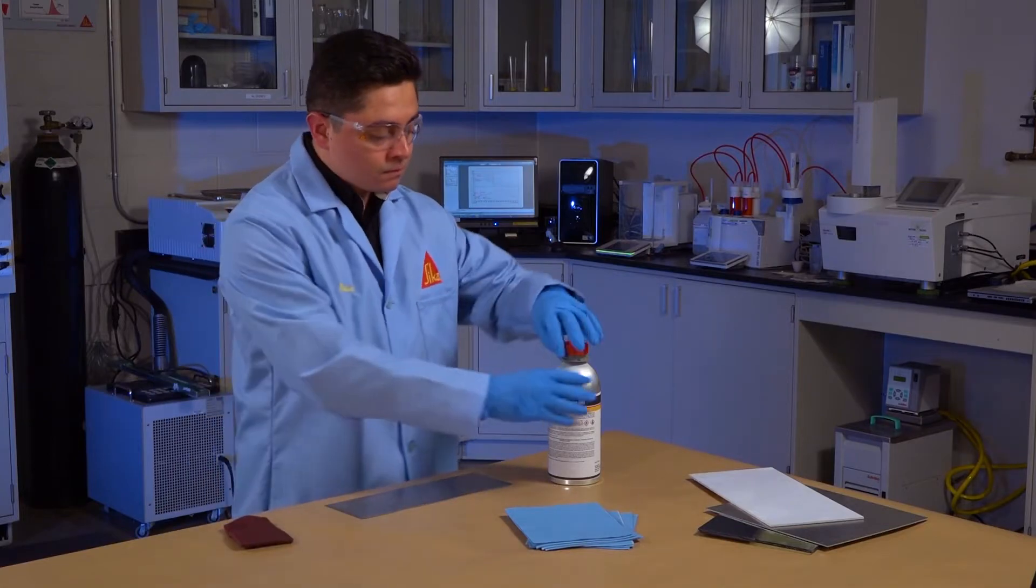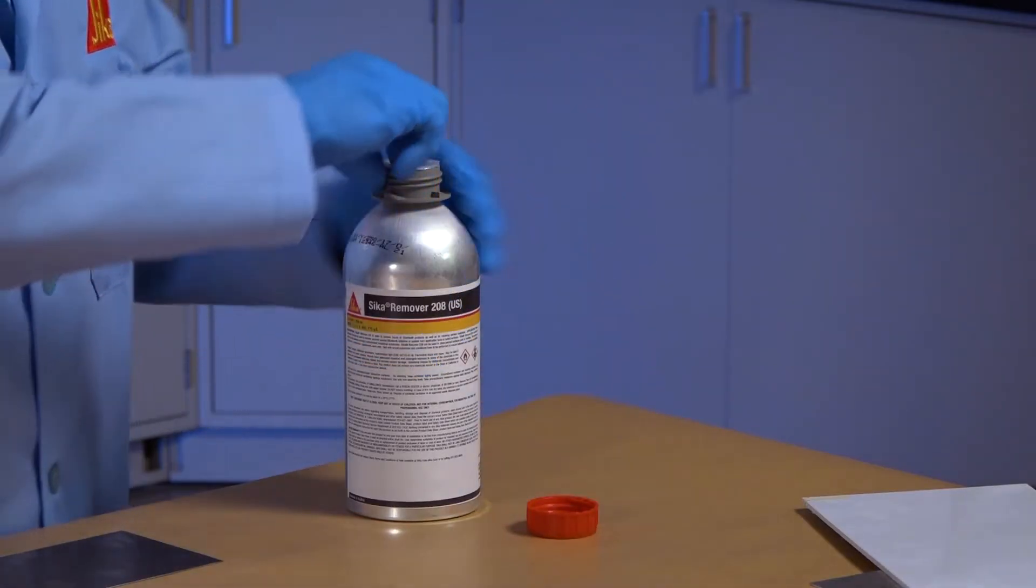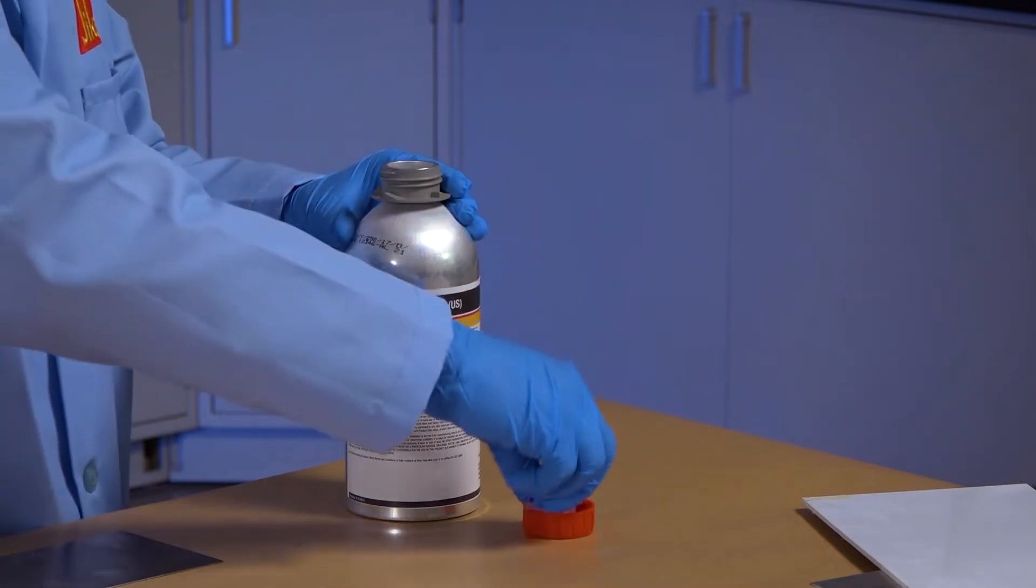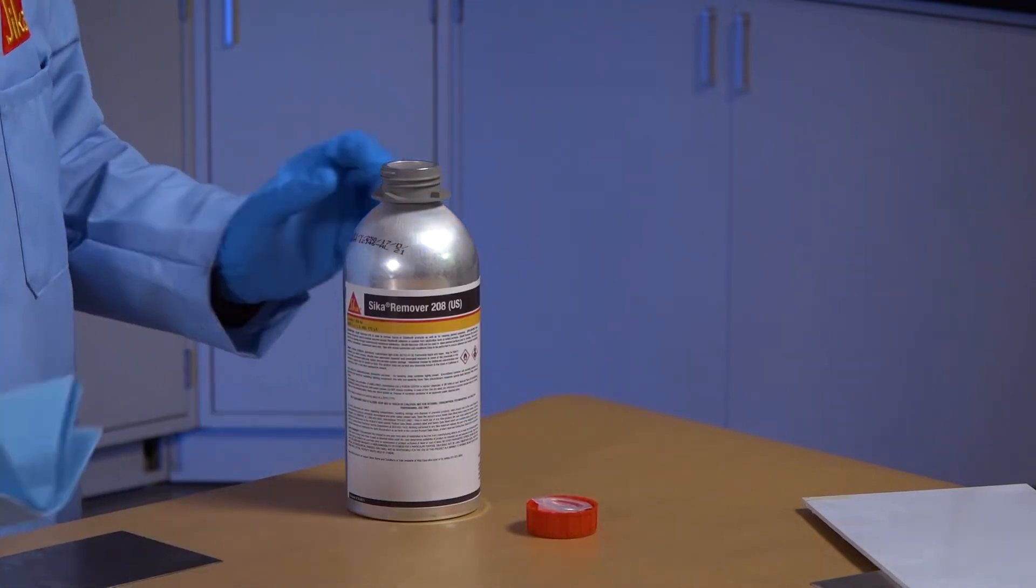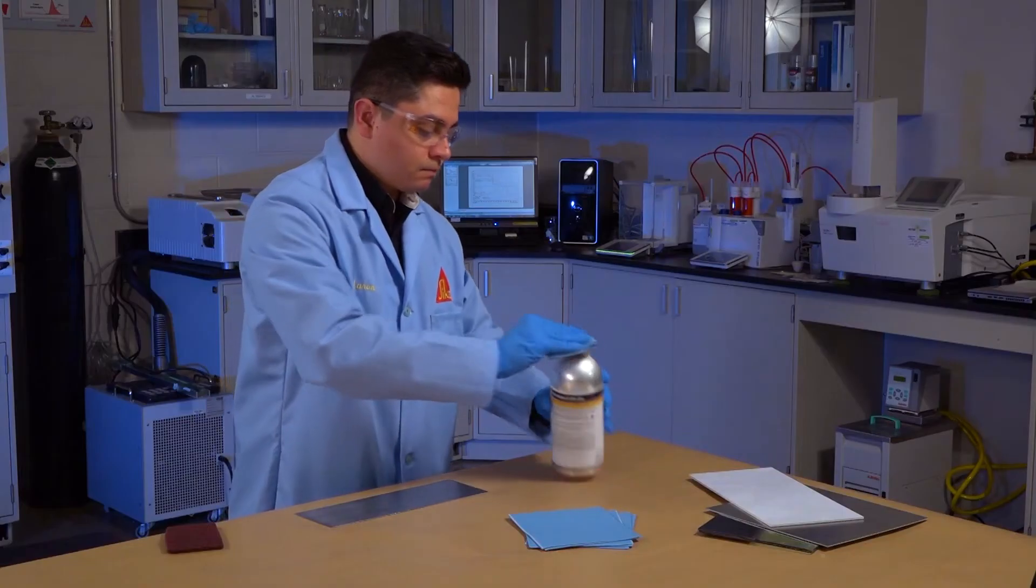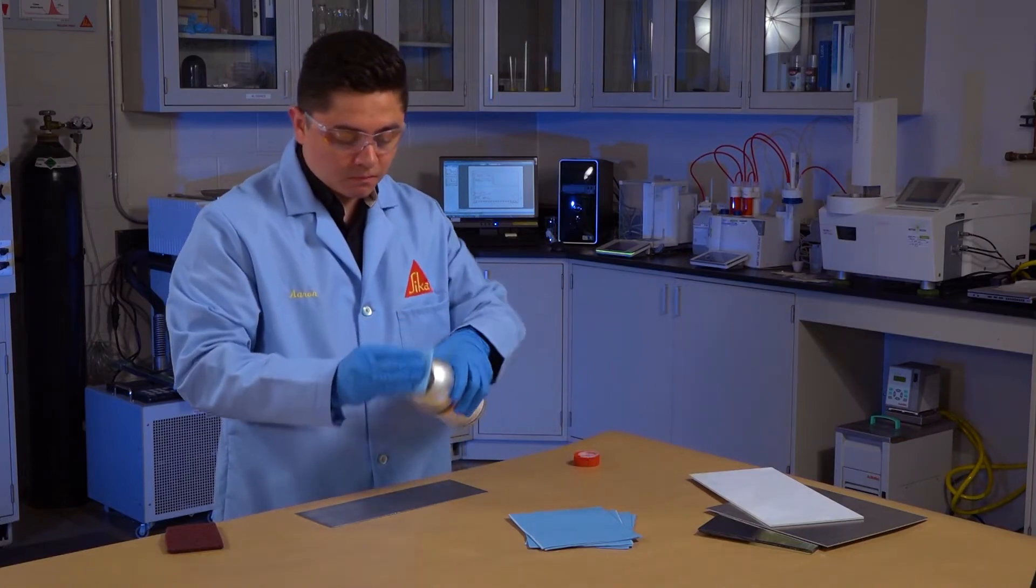Non-porous substrates, such as some metals, that are heavily soiled can be cleaned with Cica cleaning agents like Cica Remover 208 or other suitable cleaning agents. Allow the cleaning agent to dry completely before proceeding to the next step.